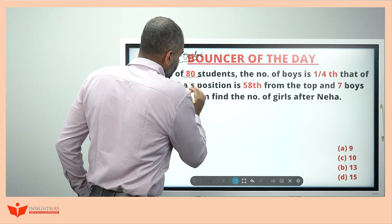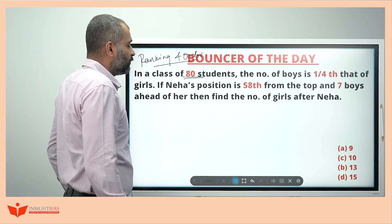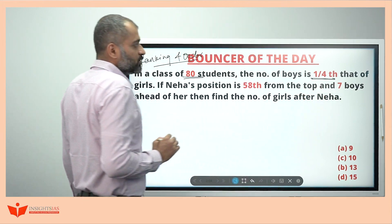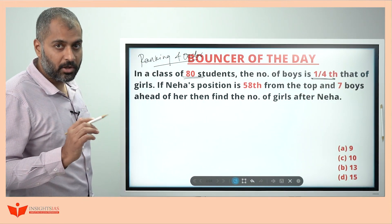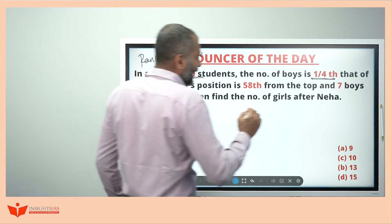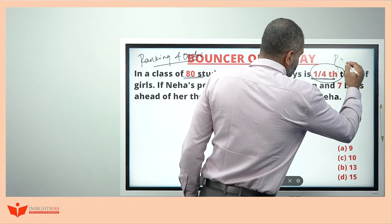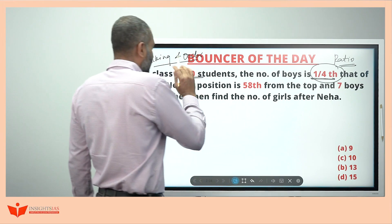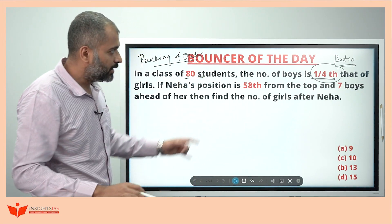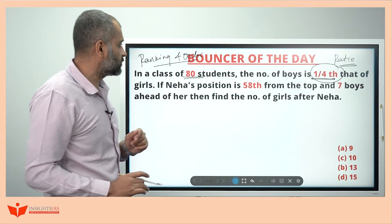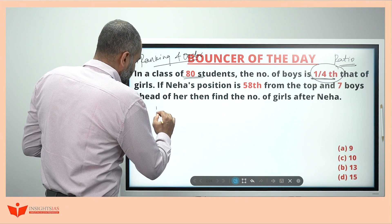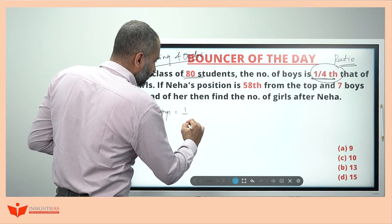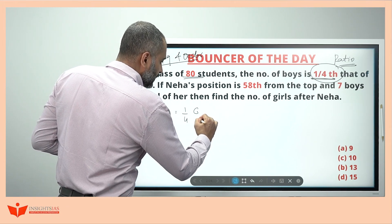In a class of eighty students, the number of boys is one fourth that of girls. This is nothing but ratio again. The concept here is ratio; the topic is ranking and order, but we will make use of ratio here as well, because the number of boys equals one fourth of girls.